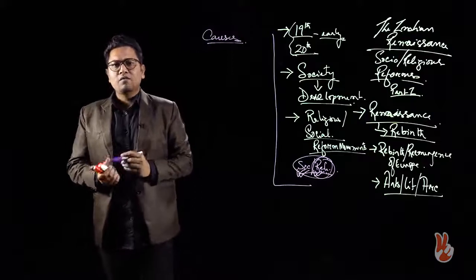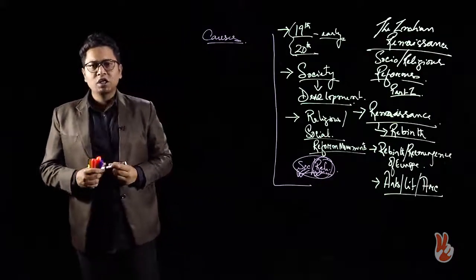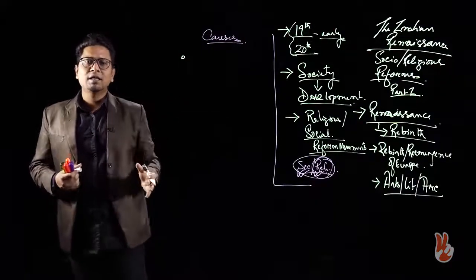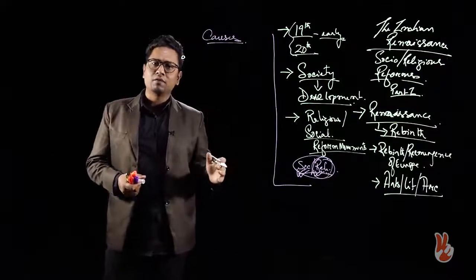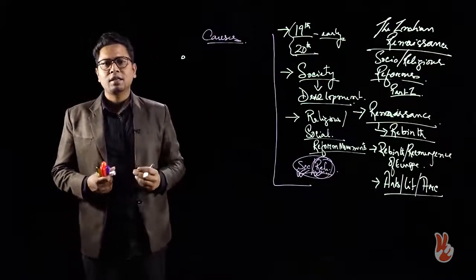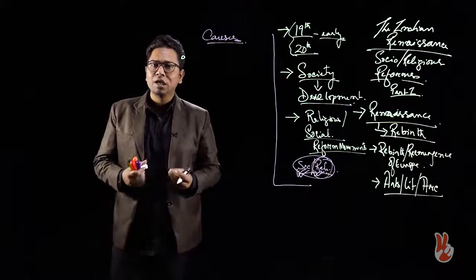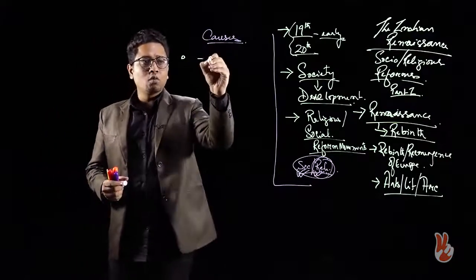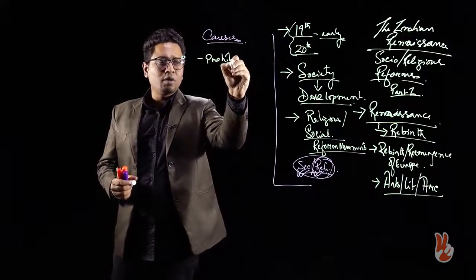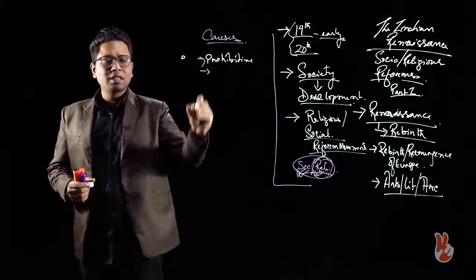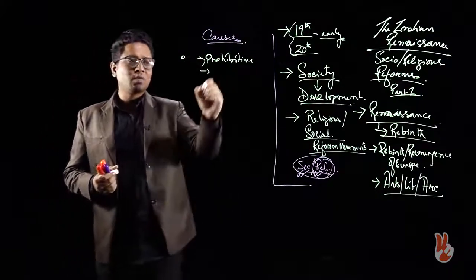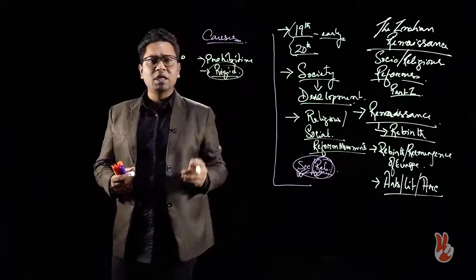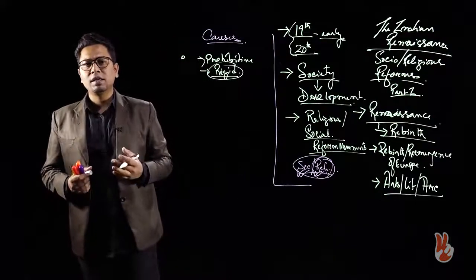Why do socio-religious reform movements take place in India? This question is pertinent because in the 17th and 18th centuries — starting in the later part of the 16th century itself — we see that India had started to stagnate. Indian society and Indian religions had started to become more and more proscriptive, more and more prohibitive, and also rigid.